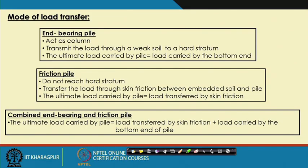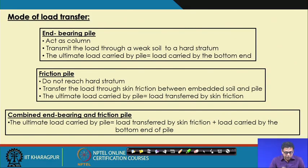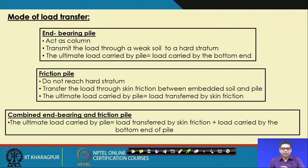Friction piles do not reach the hard stratum; they transfer load through friction between the soil and the pile. Theoretically, the ultimate load carrying capacity is due to friction only. The majority of bearing capacity comes from friction, and the pile is not rested on a hard stratum — it is on the soil itself, getting resistance there.